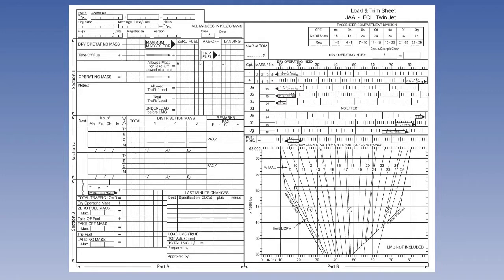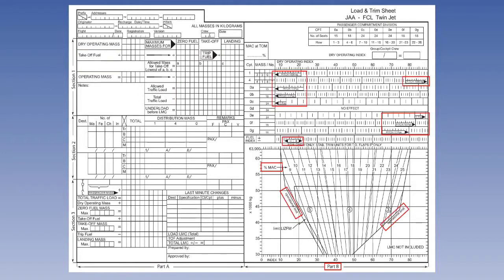The load and trim sheet is split into two parts. The left-hand side of the page, called Part A, is the loading document, which itemises the mass distribution within the aeroplane, such as operating mass, traffic and fuel load. The right-hand side, called Part B, shows how the position of the centre of gravity, represented by mean aerodynamic chord, alters with each change of mass. The zero fuel mass and the take-off mass are finally plotted in the graphical envelope of Part B, and they must be within the operational limits.